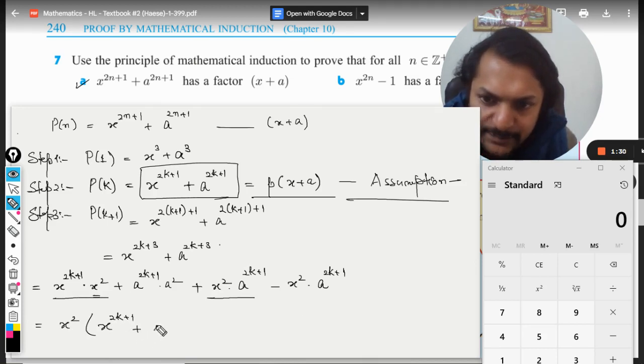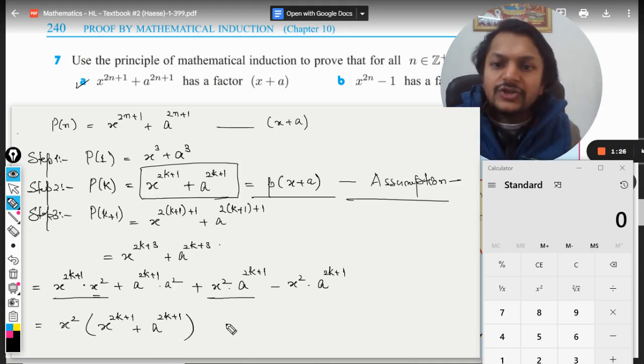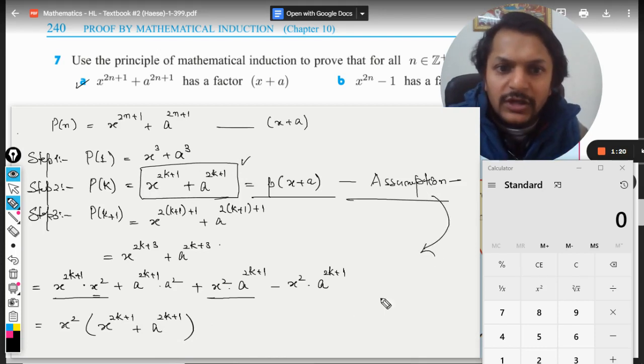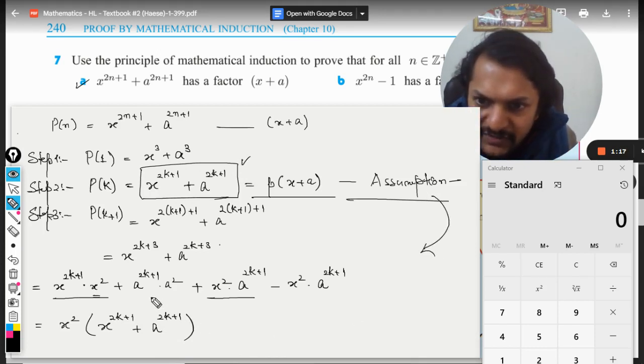From this term and this term, I am now going to take x² as common. So what do I have here? x² times (x^(2k+1) + a^(2k+1)). There we go, we have created the statement that we wanted. We can use this assumption now.